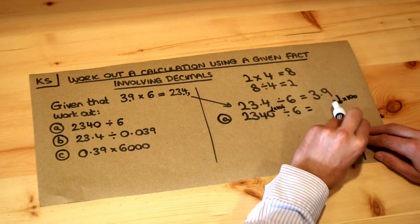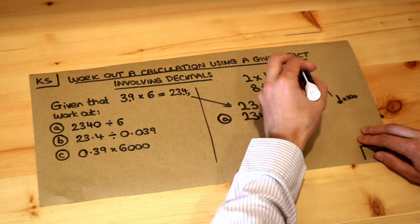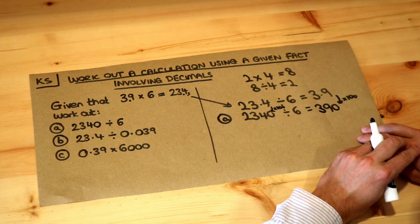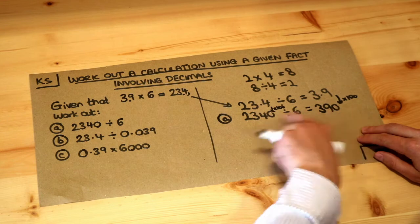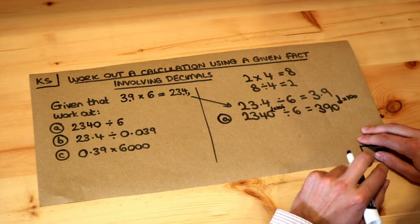So if I make this 100 times bigger, if I times by 10 first, you get 39. Times by another 10, you get 390. So this is going to give you an answer of 390. And notice I was able to do this calculation without actually explicitly working out what is 2340 divided by 6.